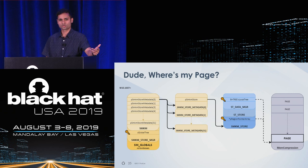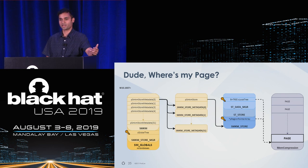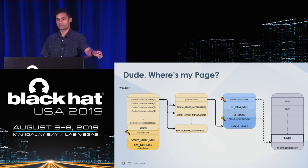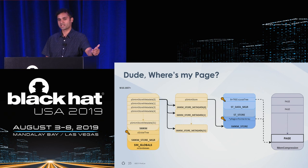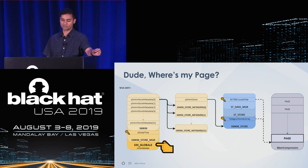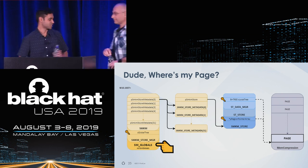Now you might be wondering: we have the store manager page key, but how do we actually get our page back? The store manager page key is used as we traverse a series of undocumented Windows 10 store manager structures. It drives metadata that ultimately helps you reconstruct the address of your compressed page within the mem compression process. The left side has structures corresponding to the store manager as a whole; the right side focuses on specific stores. All magic begins at the export called SM Globals. I'll hand it off to Dmitry now.